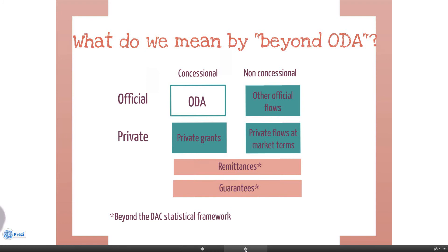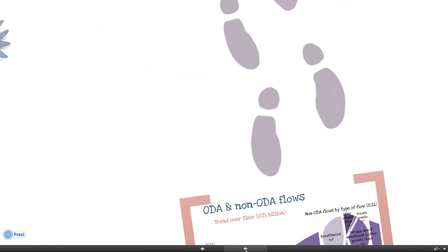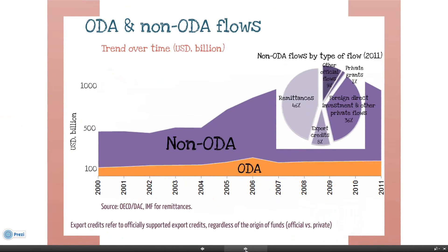Now, let's have a look at the data. Here is the trend of ODA versus non-ODA flows extended to developing countries over the past 11 years. As seen in the chart, ODA alone provides only a partial picture of total resource flows to developing countries.